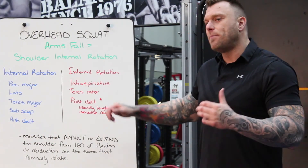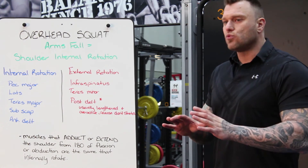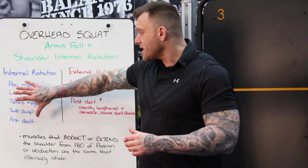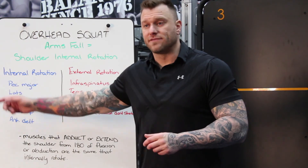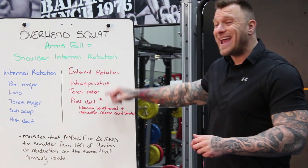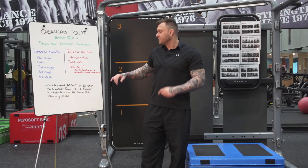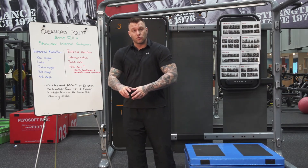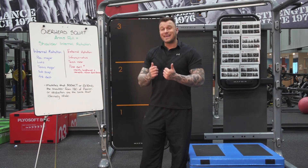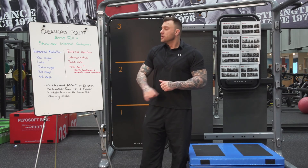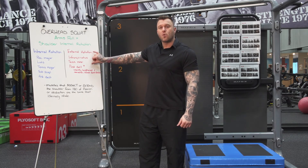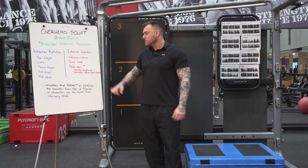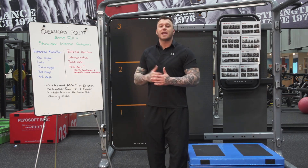Now there's a bit of an asterisk on the posterior delts — this is very rare, but it does happen. The internal rotators are usually tightened and overactive; the external rotators are lengthened and underactive. The posterior delts, though, when you have a lot of shoulder internal rotation, are actually being lengthened and overactive. So in this situation, the infraspinatus and teres minor we want to activate, but the posterior delts we want to release, not activate.